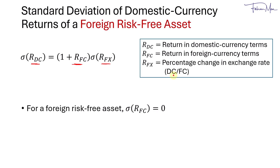That's domestic currency per unit of foreign currency. A key takeaway here is that for a foreign risk-free asset, the standard deviation of the asset's return is zero. This makes sense because a risk-free asset by definition has no variability in its returns.